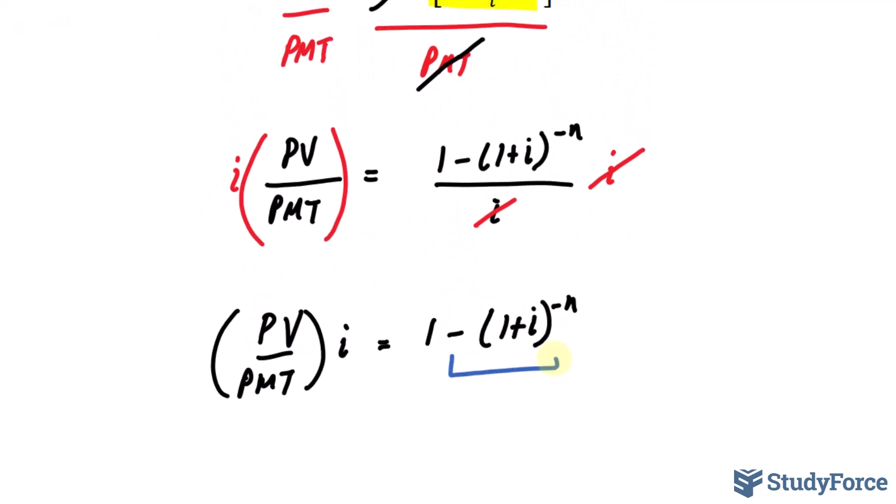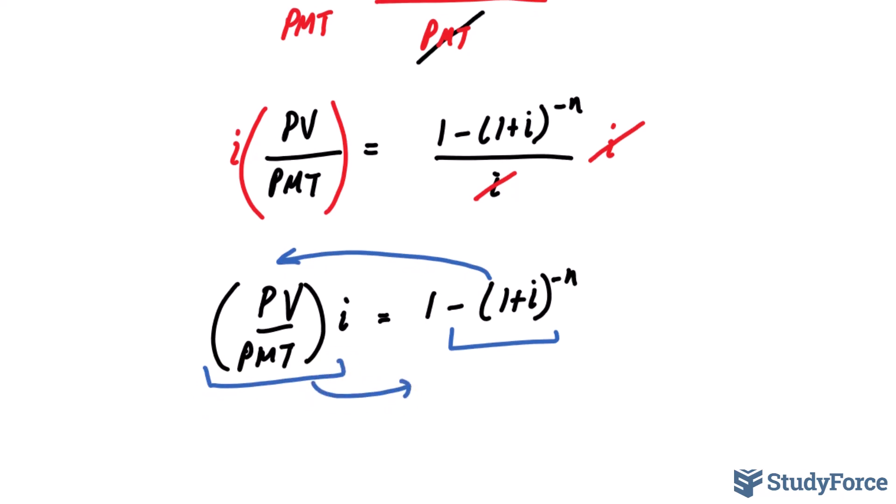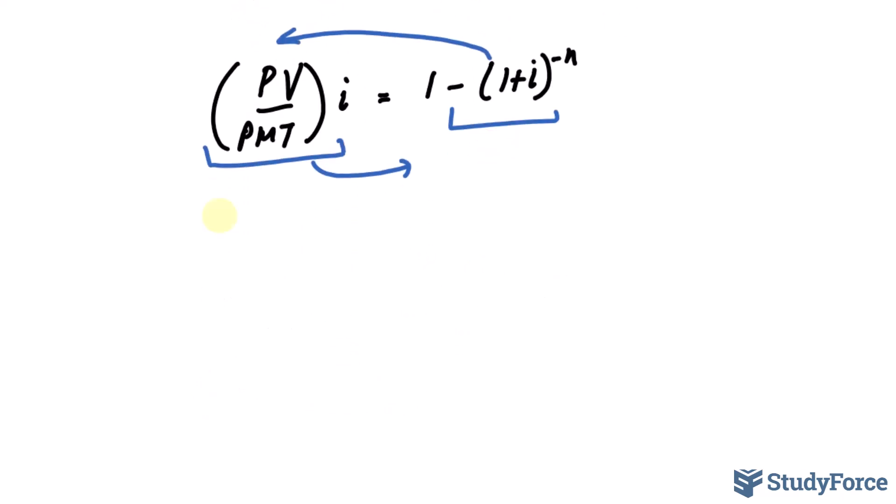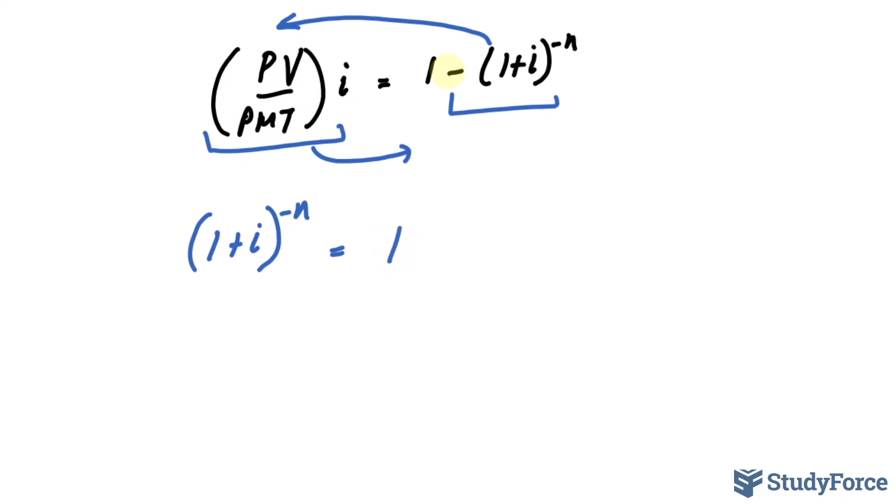Following that step, I will now transfer over that term over to the left side and this term over to the right side. You'll end up with 1 plus i raised to the power of negative n. Notice that the negative becomes positive once you transfer it over to the left side. And this term, which is currently positive, becomes negative. So we have 1, take away that term, PV over PMT times i.